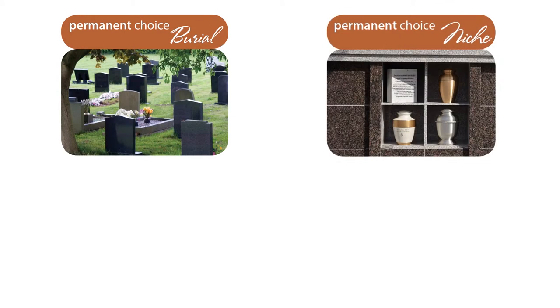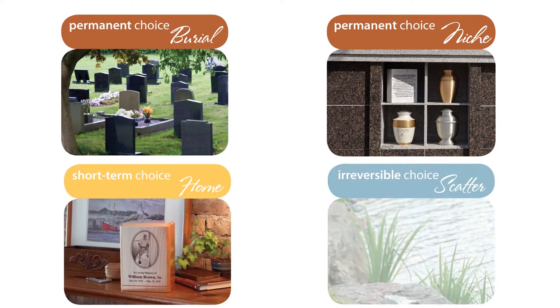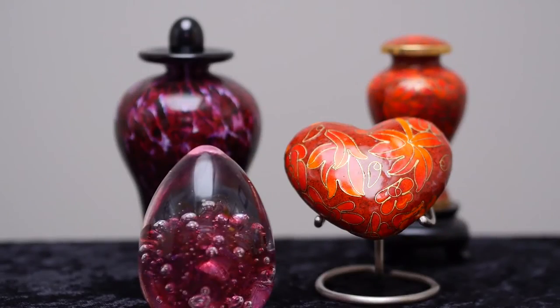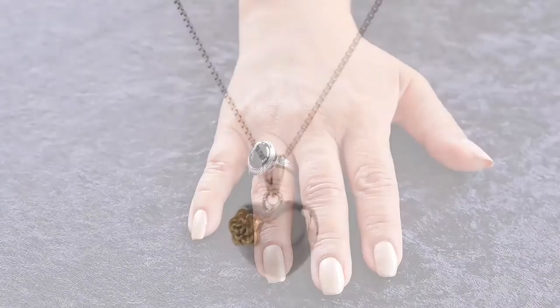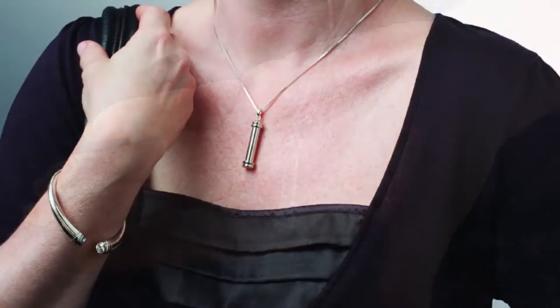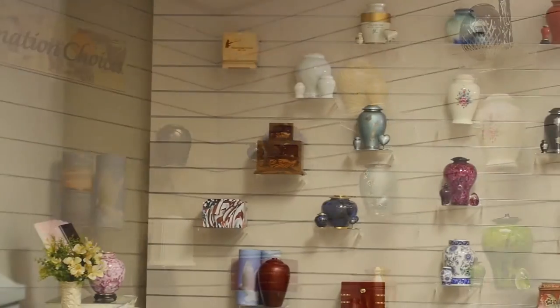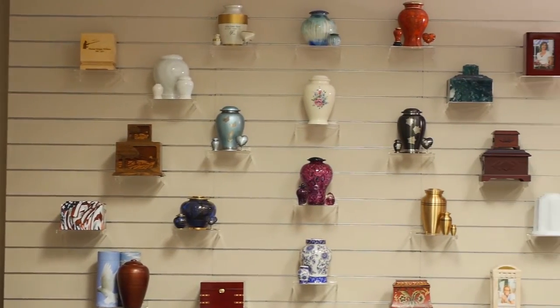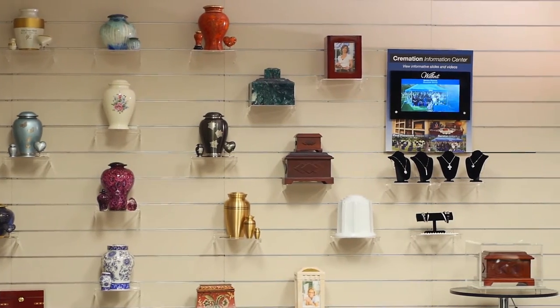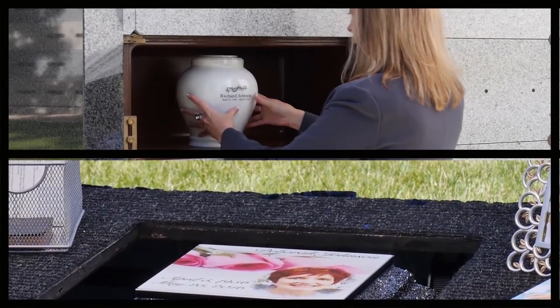Whether you choose burial, columbarium placement, home display, or scattering, you may wish to select small memento urns or memorialization jewelry to share a portion of your loved one's cremated remains with family and friends. The choices you'll make for final disposition can also guide your urn selection. For example, burial or niche placement will have certain requirements, which your funeral professional can explain.